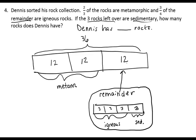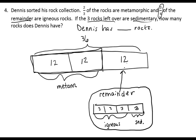Now we can see that Dennis had thirty-six rocks to begin with. The nice part is we can work back through the question from the start and see that it makes sense. Two-thirds of the rocks are metamorphic — two sections represent the metamorphic. I take my remainder of twelve and break it into four equal pieces, because three-fourths of the remainder are igneous. That represents that part of the remainder, and then the leftover three rocks are sedimentary. So that works when we go through the problem forward. Dennis has thirty-six rocks.